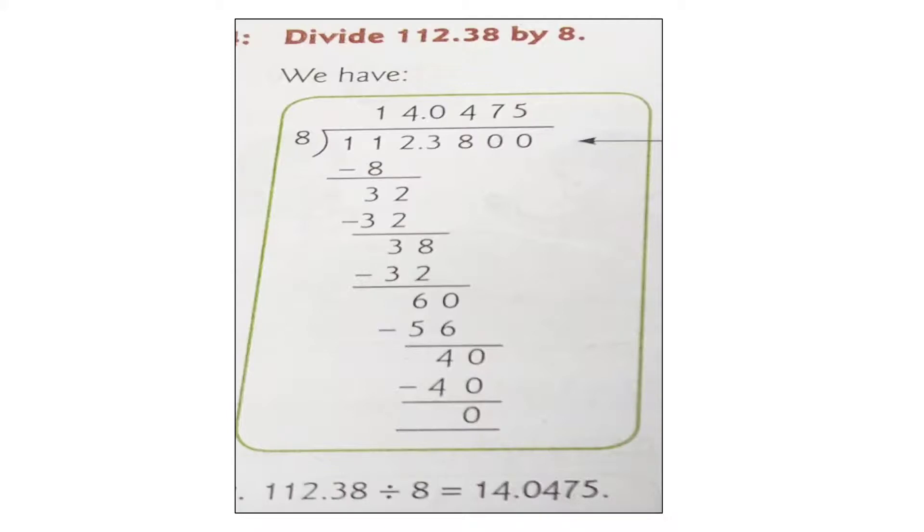8 ones are 8. 11 minus 8 is 3. Bring down 2. 8 fours are 32. 32 minus 32 is 0. Bring down 3, and bring down 8 also because 3 is not divisible by 8.